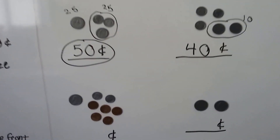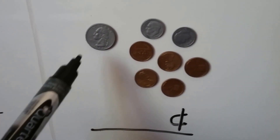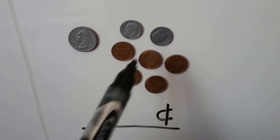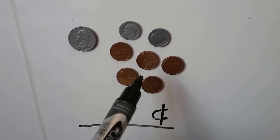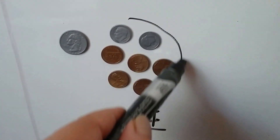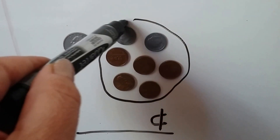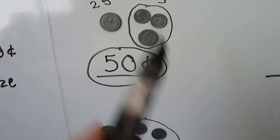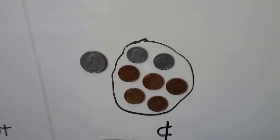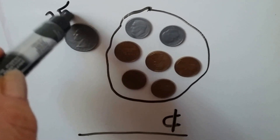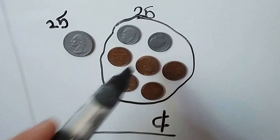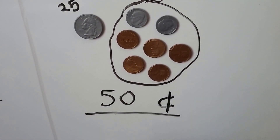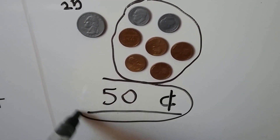Let's try the next one. We have a quarter — that's 25 — and a dime, a dime, and five pennies. Remember, five pennies is the same as a nickel, so we actually have two dimes and a nickel, which equals 25 cents. So again we have 25 and 25; counting by 25s: 25, 50. We have enough to buy the juice.